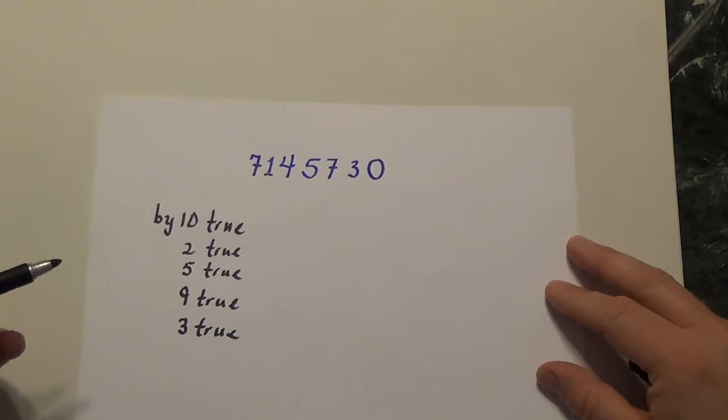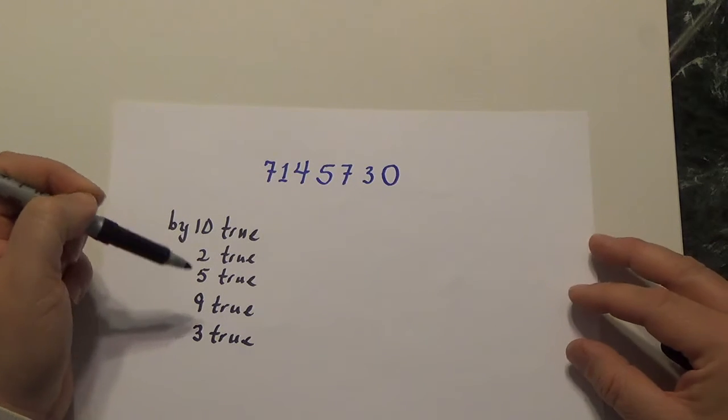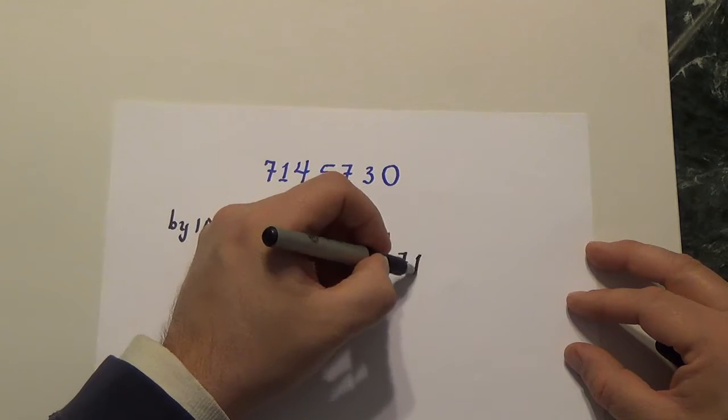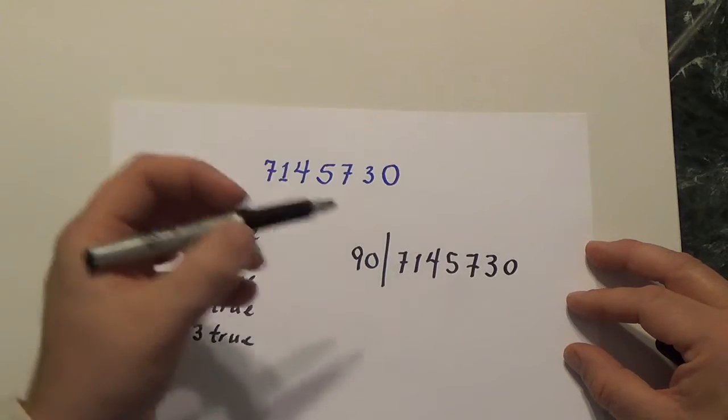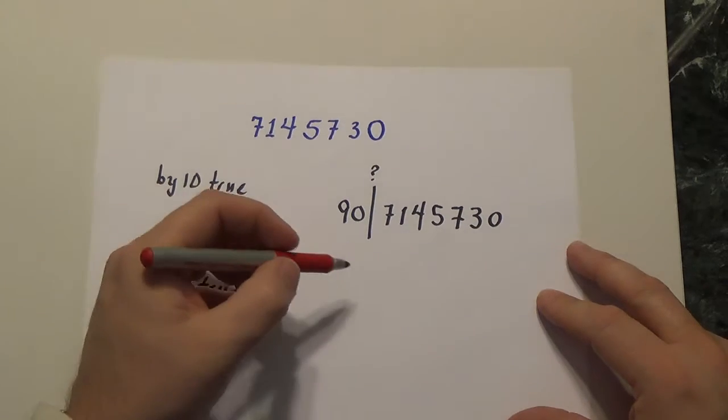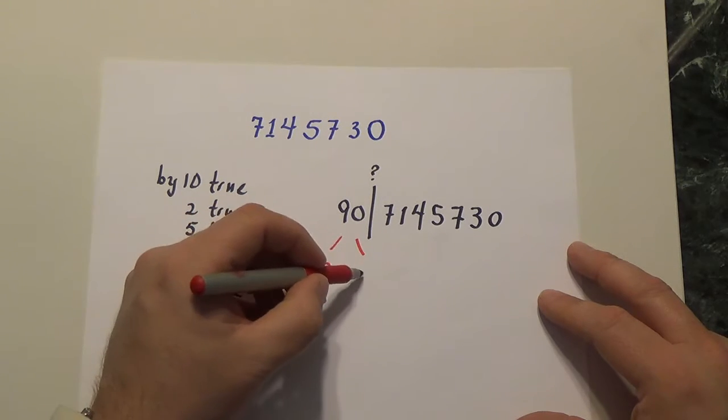My question is, does 90 divide 7145730? This is my question. Does 90 divide that number? The question the student might have is, is there some type of rule that we're supposed to memorize for division by 90? And the answer is no. What we should do is look at numbers that we know divide 90 into pairs. I know that 90, a convenient factorization of 90, is 9 times 10.